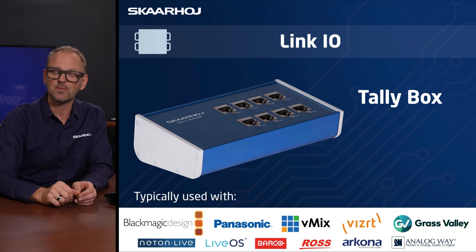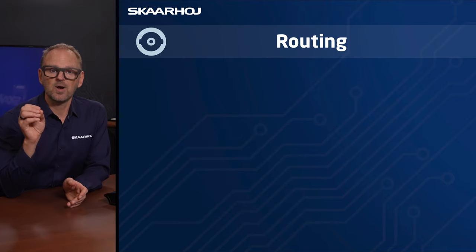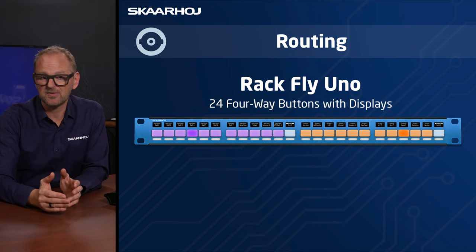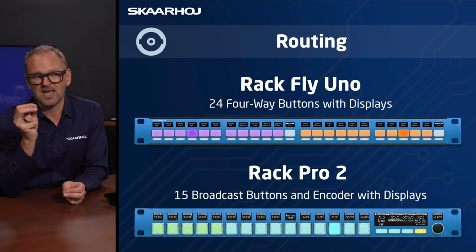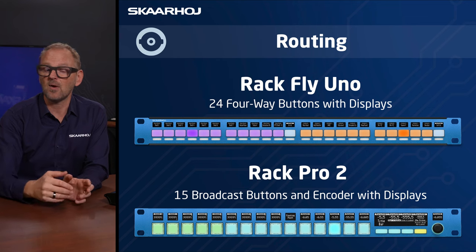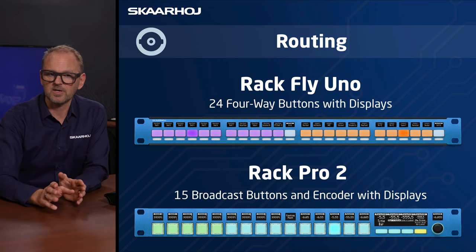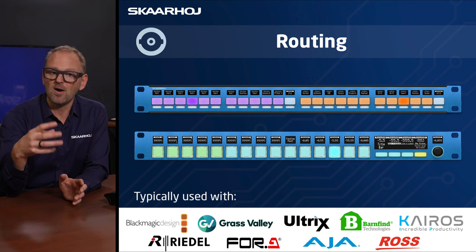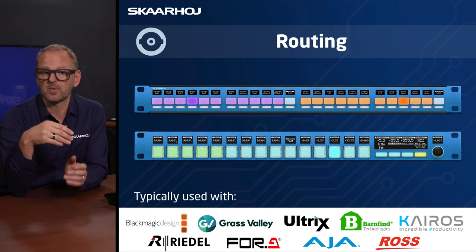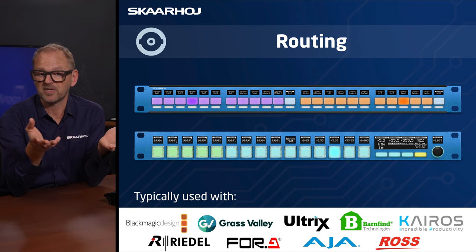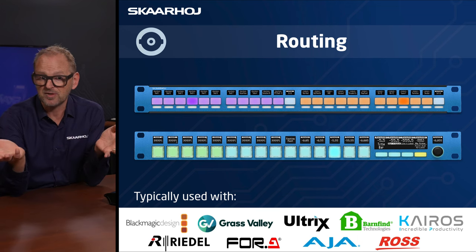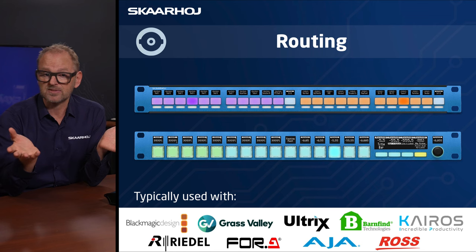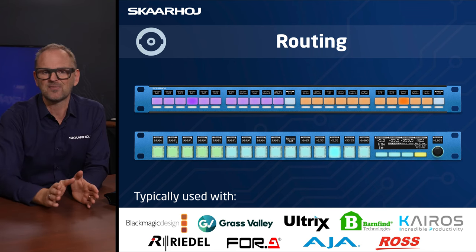The final category is routing. The RecFly Uno features 24 four-way buttons with displays — great for routing and video routers. The RecPro 2 has 15 broadcast buttons plus an encoder with a display. Compatible routing brands include Blackmagic Video Hub, Grass Valley AMP platform including Maverick X, Atterotech routers, Barnfind, KROS, RIDL routers — many of which are SW-P-08 protocol compliant — 4A routers, AJA Kumo, and Ross Talk integration.